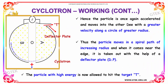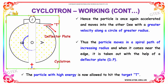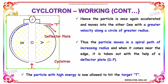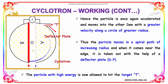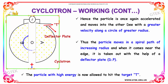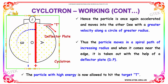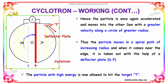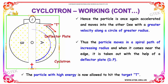Hence, the particle is once again accelerated and moves into the other D with a greater velocity, following a circle of greater radius. Thus, the particle moves in a circular path of increasing radius until it comes near the edge, where it is deflected with the help of a deflector plate. The particle with high energy is then allowed to hit the target T.